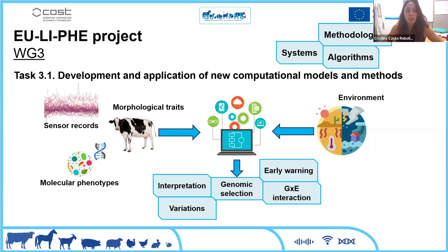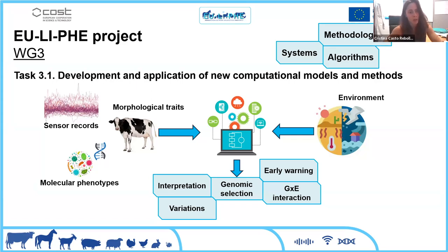We also want to analyze and integrate environmental data with the phenome and other omics to improve animal selection — for example by developing predictive modeling methods using machine learning, and trying to better understand and integrate the G×E interaction (genome by environment interaction), and the integration of other omics with phenomic variation, all to facilitate extrapolation, interpretation, and inference of results.